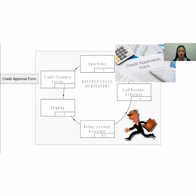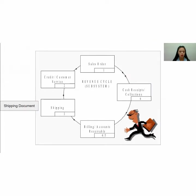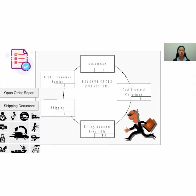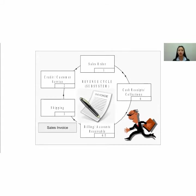The amount of credit limits should be documented on the approval form. Once the entity has received the order, they need to do an open order report — a report of all customer orders for which the process has not been completed. After the order has been accepted, the shipping department will start to pack the goods and send it to the customer. Shipping documents are prepared every time goods are shipped, containing the time and quantity of products shipped and other relevant information. After goods have been shipped and billed, the order should be noted as filled in the open order report. In the billing process, the sales invoice is used to bill customers.